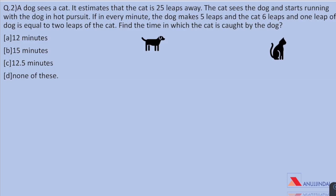Question 2. A dog sees a cat and it estimates that the cat is 25 leaps away. The cat sees the dog and starts running with the dog in hot pursuit. If in every minute the dog makes 5 leaps and the cat 6 leaps and 1 leap of dog is equal to 2 leap of cats, find the time in which cat is caught by the dog. This is a question where we would be using the concept of relative speed.